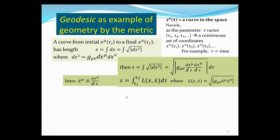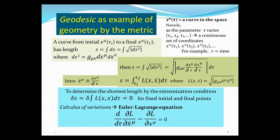The integrand of s is a function L, which depends on position through the metric and on x-dot, integrated over d tau. We want to determine, between two fixed points, which curve has the shortest length. By the extremization condition — variation of the curve such that delta S equals zero for fixed initial and final points — and through calculus of variations, one can show the condition is the Euler-Lagrange equation, where L is this integrand.